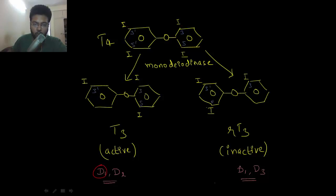The D1 type of monodeiodinase can remove iodine from the 5-dash position and from the 5 position as well. If it removes iodine from the 5-dash position, the compound formed is called T3 and it's active and can act in the cell. If it removes iodine from the 5 position, it forms reverse T3, which is inactive and cannot act in the cell. So D1 monodeiodinase can remove iodine from both rings.